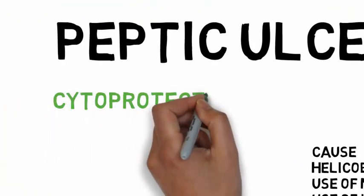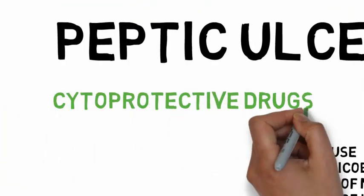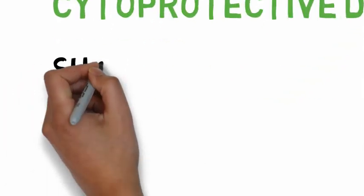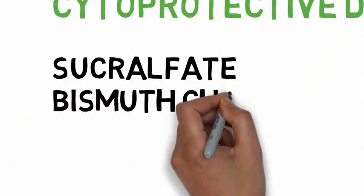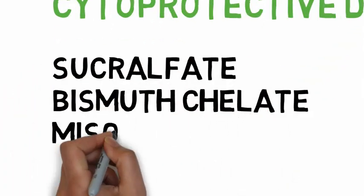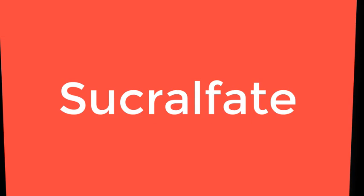Cytoprotective drugs include sucralfate, bismuth chelate and misoprostol. Sucralfate is a viscous polymer of sucrose octosulfate and aluminum hydroxide. This sulfated polysaccharide adheres to ulcer craters and epithelial cells, and it inhibits pepsin-catalyzed hydrolysis of mucosal proteins.